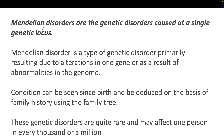Mendelian disorders are genetic disorders caused at a single genetic locus, primarily due to alteration in one gene or abnormality in the genome. If an offspring shows a Mendelian disorder, we can deduce where the disorder came from by analyzing the family history through a pedigree tree. These disorders are quite rare, affecting one person in every thousand or million.